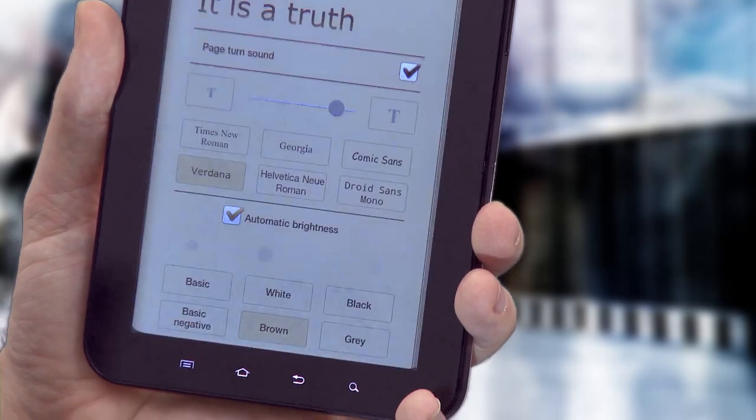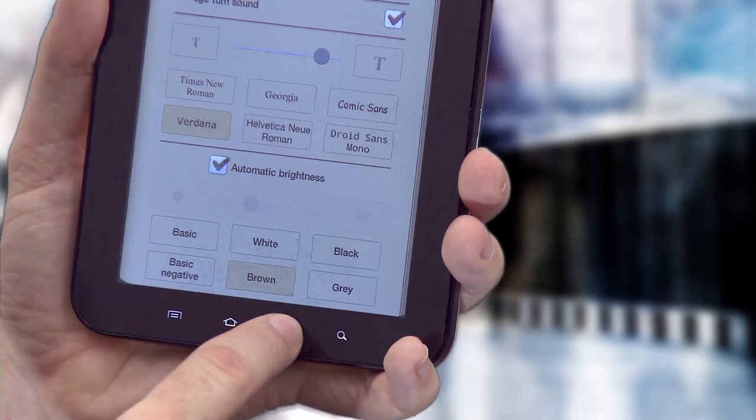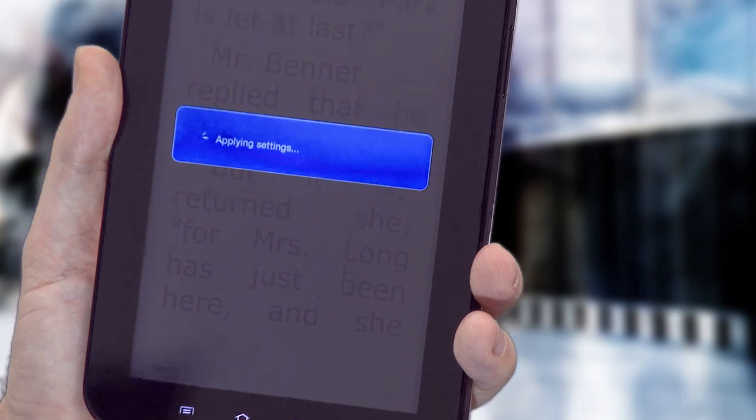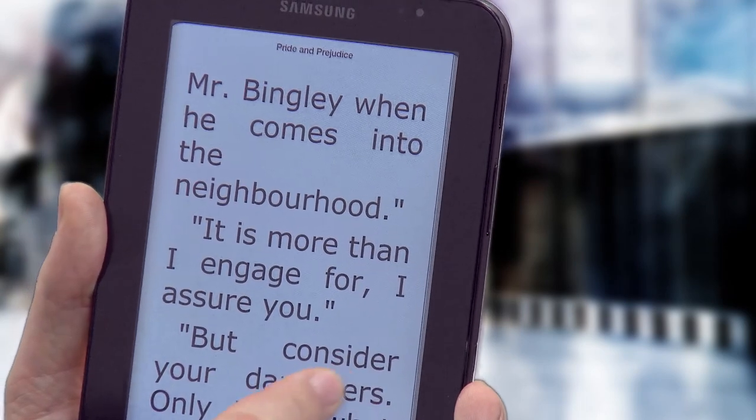You can change the text size and the background of the paper. So here it is, with large text on a brown background.